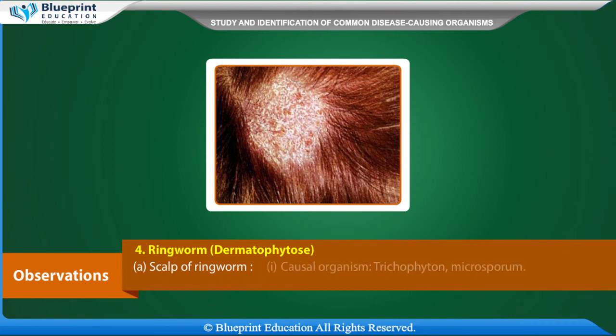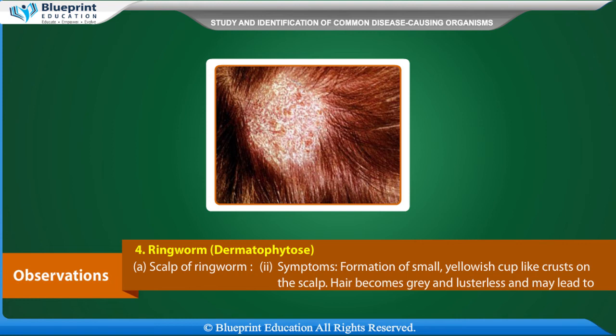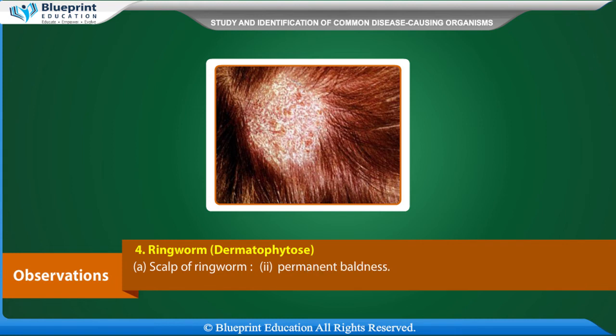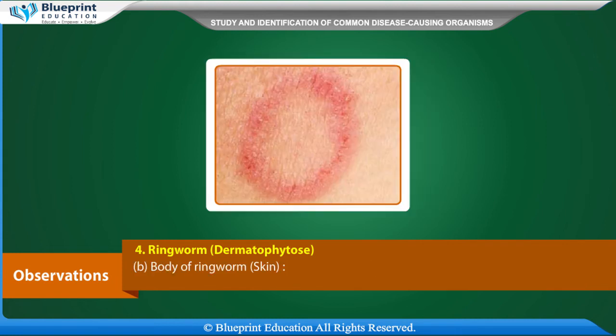Scalp ringworm: the causal organisms are Trichophyton and Microsporum. Symptoms include formation of small yellowish cup-like crusts on the scalp. Hair becomes gray and lustreless, and it may lead to permanent baldness.